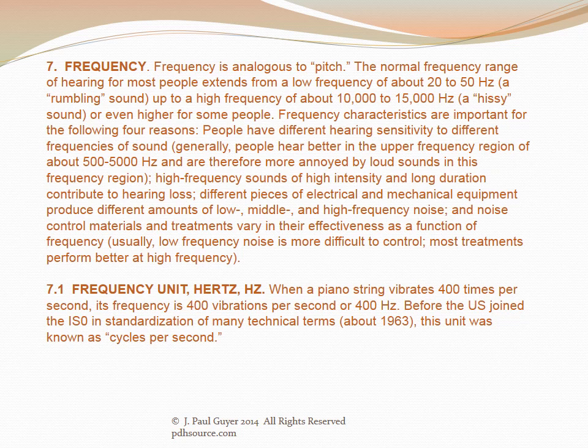Frequency is analogous to pitch. The normal frequency range of hearing extends from about 20–50 Hz (a rumbling sound) up to about 10,000–15,000 Hz (a hissy sound). Frequency characteristics are important for four reasons: people have different hearing sensitivity at different frequencies (best around 500–5,000 Hz); high frequency sounds of high intensity contribute to hearing loss; different equipment produces different frequency distributions; and noise control materials vary in effectiveness with frequency — low frequency noise is generally more difficult to control.